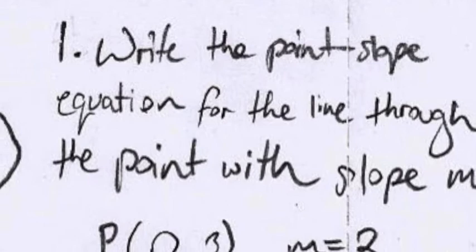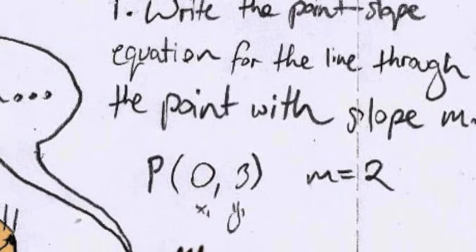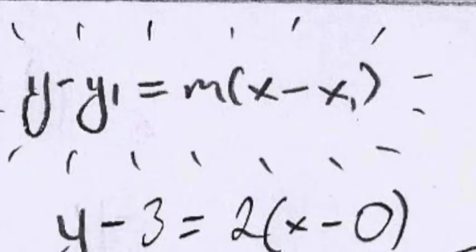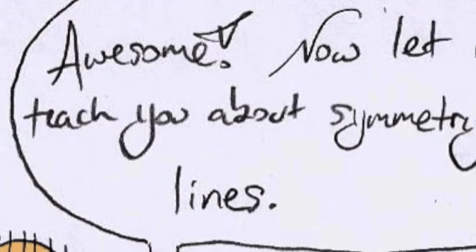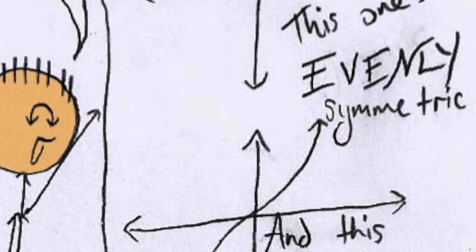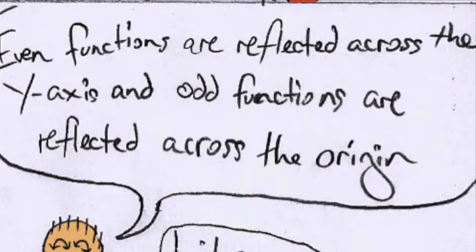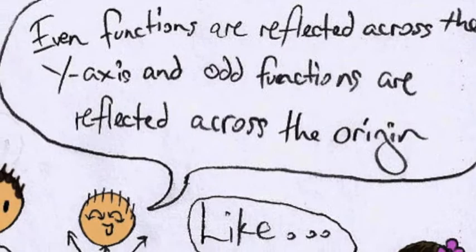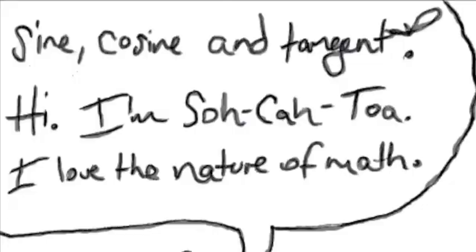Hmm. There! Awesome! Now let me teach you about symmetry of lines. Lines can be symmetric? Yes, and this one's evenly symmetric, and this one's odd. Even functions are reflected across the y-axis, and odd functions are reflected across the origin. Like, sine, cosine, and tangent.